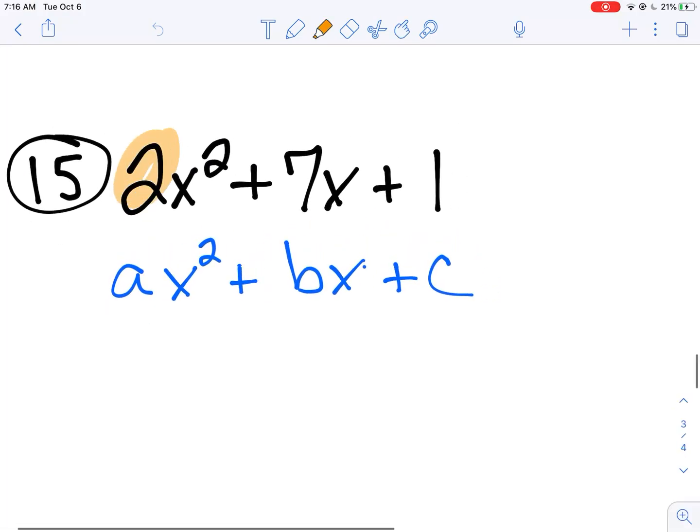Now remember, first things first, we're going to identify a and c. So we've got 2 and 1. So that is a... I can make that look better, a times c equals 2.